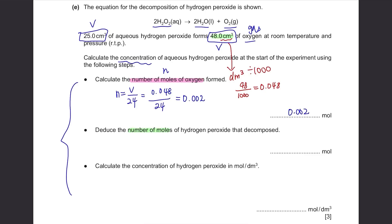Deduce the number of moles of hydrogen peroxide that decomposed. We know the number of moles of oxygen. We can easily find it by comparing the ratio. The ratio of hydrogen peroxide to oxygen is 2 to 1. The number of moles of oxygen was 0.002. So for hydrogen peroxide, you just have to multiply it by 2 and the answer is 0.004.